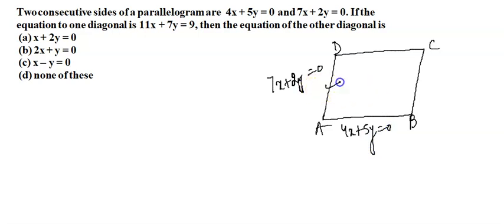Now if I solve these two equations, we will get a point of intersection as (0, 0). So we can say that coordinates of A will be (0, 0). Now in this parallelogram we have two diagonals, BD and AC, and one thing is very sure that this diagonal does not pass through the origin.